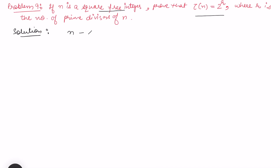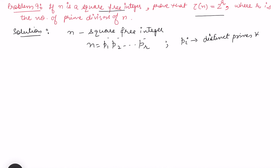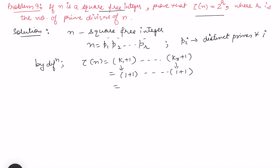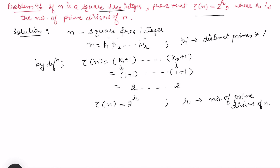Take n as a square-free integer. Its prime factorization has no repeated prime powers, so n = p₁·p₂·...·p_r where each pᵢ is a distinct prime. By the divisor count formula, τ(n) = (k₁+1)(k₂+1)...(k_r+1). Since each exponent is 1, each factor is 1+1 = 2, so τ(n) = 2·2·...·2 = 2^r, where r is the number of prime divisors.